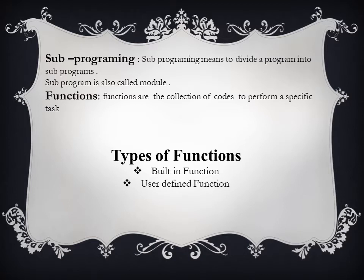First, we have the definition: what is sub-programming? Sub-programming means to divide a program into sub-programs. We also call these modules. A sub-program means dividing a large program into smaller programs. Next, we have the definition of functions — functions are a collection of code that we use to perform different tasks.